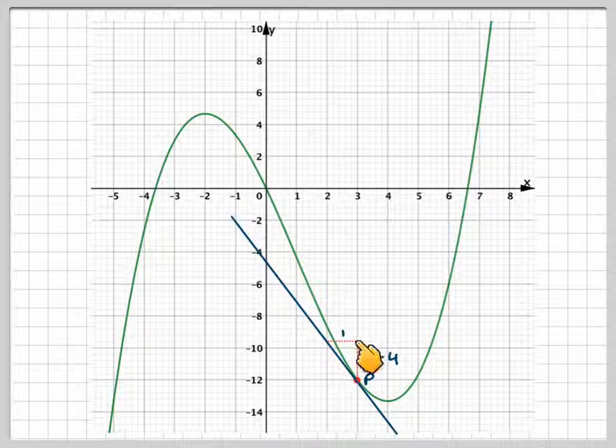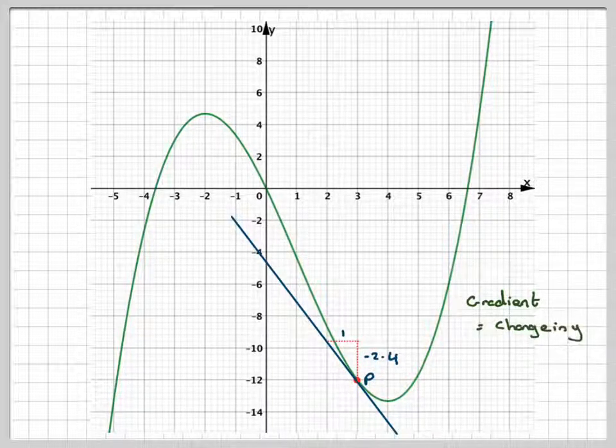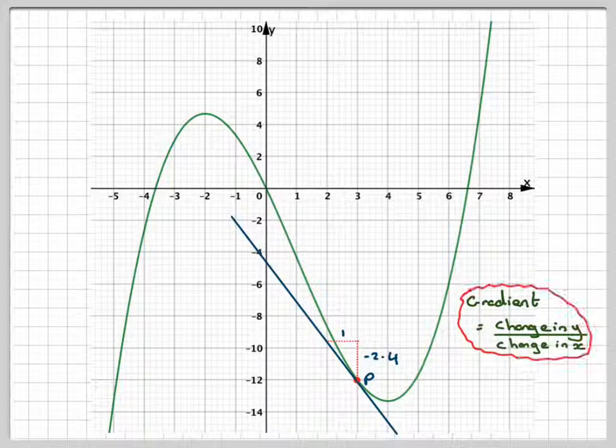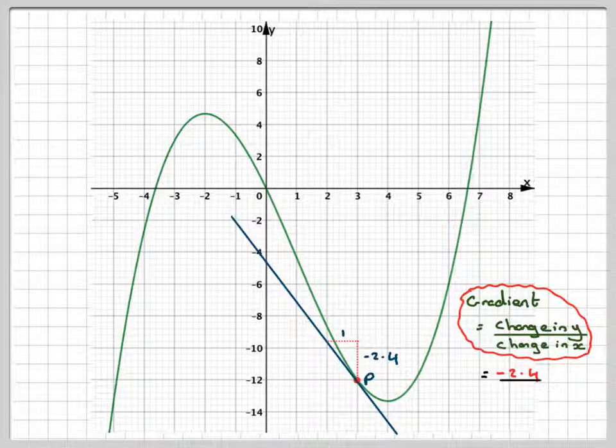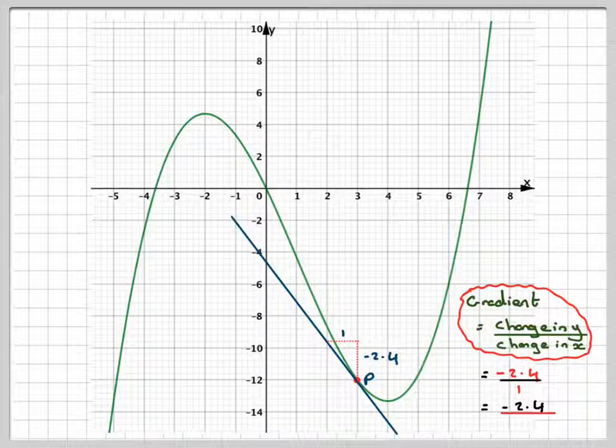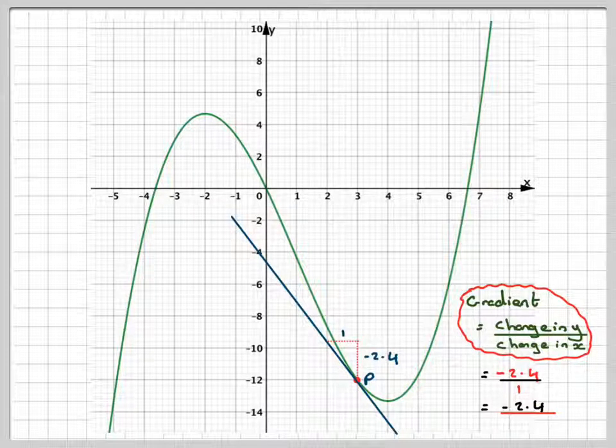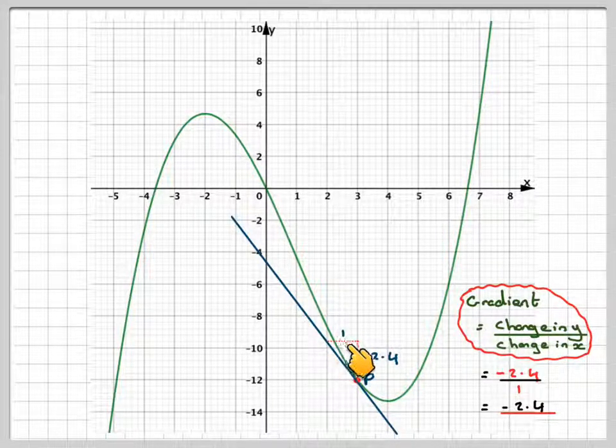Right, so the gradient is the change in y divided by the change in x. So that's going to be minus 2.4 divided by 1, which gives me a gradient of minus 2.4. Now in the final answer here, there will be a leeway in which the examiner can accept your solution. But you're strongly suggested to show some sort of working on your graph.